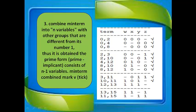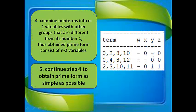Step 3: Combine minterms of n variables with other groups that differ by one in their number of 1s. Thus the obtained prime form — prime implicant — consists of n-1 variables. Minterms that are combined are marked with a tick. Step 4: Combine minterms of n-1 variables with other groups that differ by one in their number of 1s. Thus the obtained prime form consists of n-2 variables.